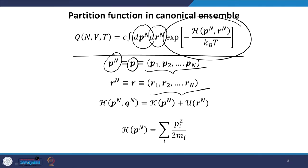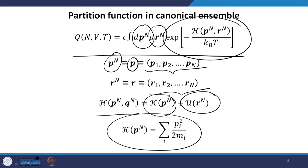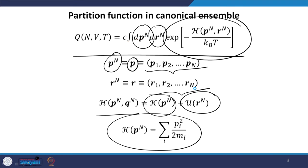From now on I will represent dp by dp^n and dr by dr^n — keep in mind that in both cases it represents the momentum and coordinates of all the particles in the system. My Hamiltonian in most cases can be broken down into two distinct terms: one that depends on momentum only, and one that depends on positions only. The first term is the kinetic energy, given by the sum of p²/2m over all molecules, and then we have a potential energy part coming from inter-particle interactions.